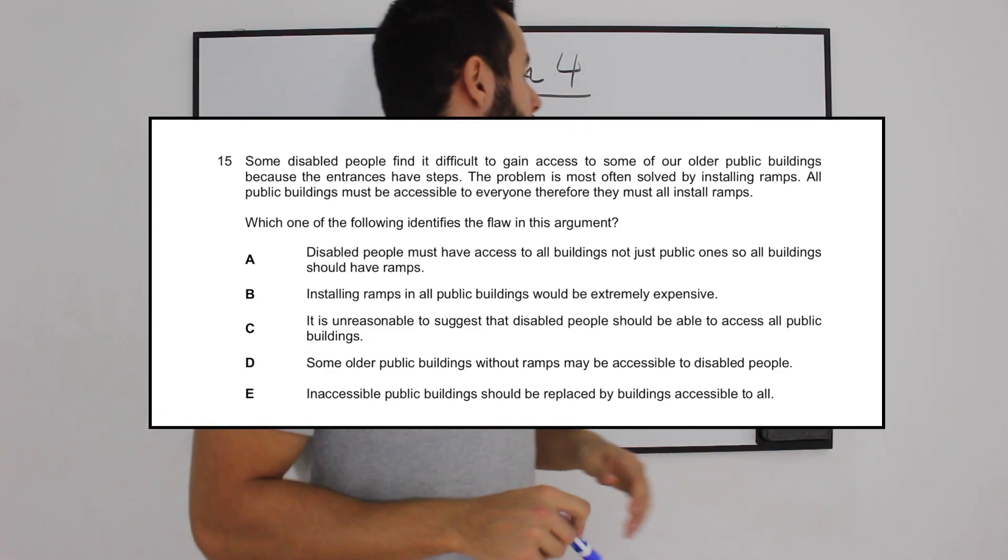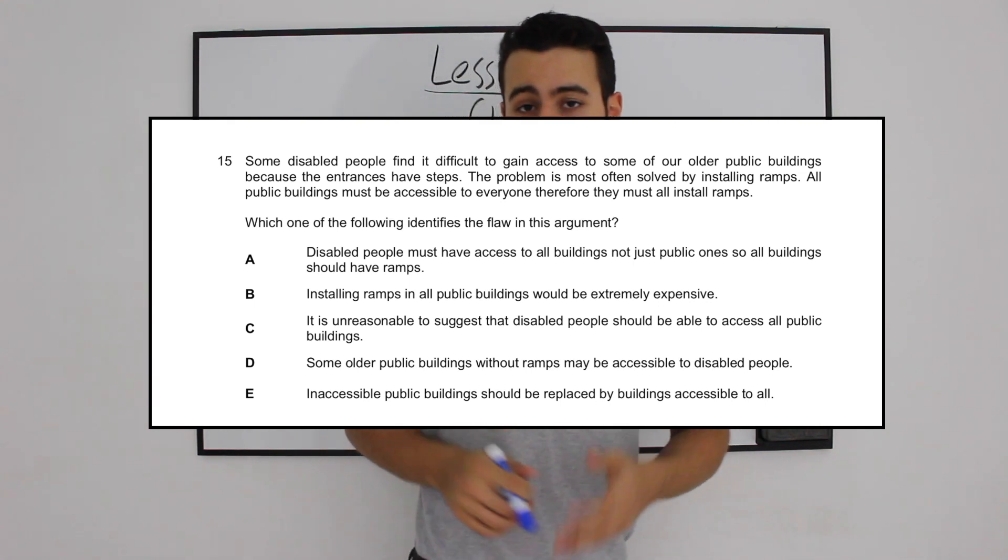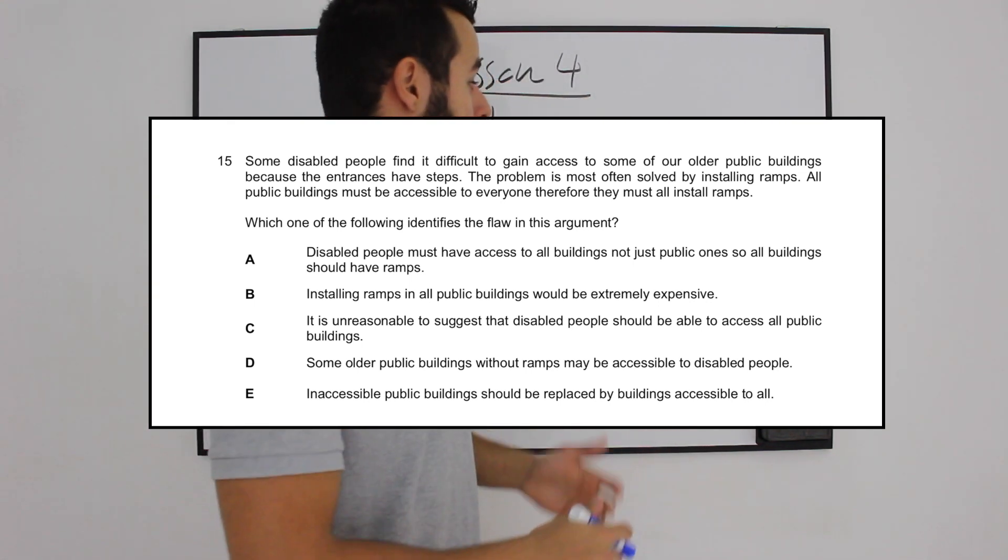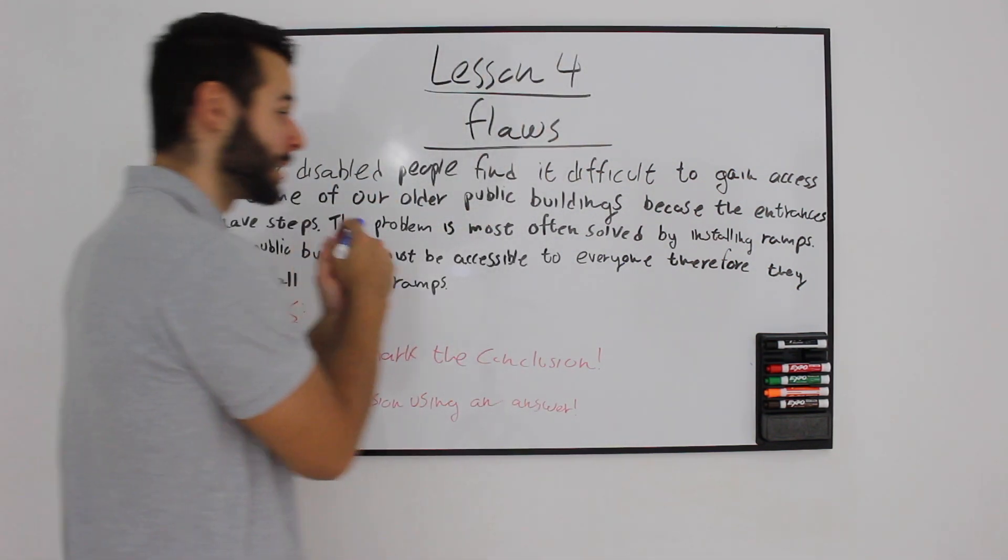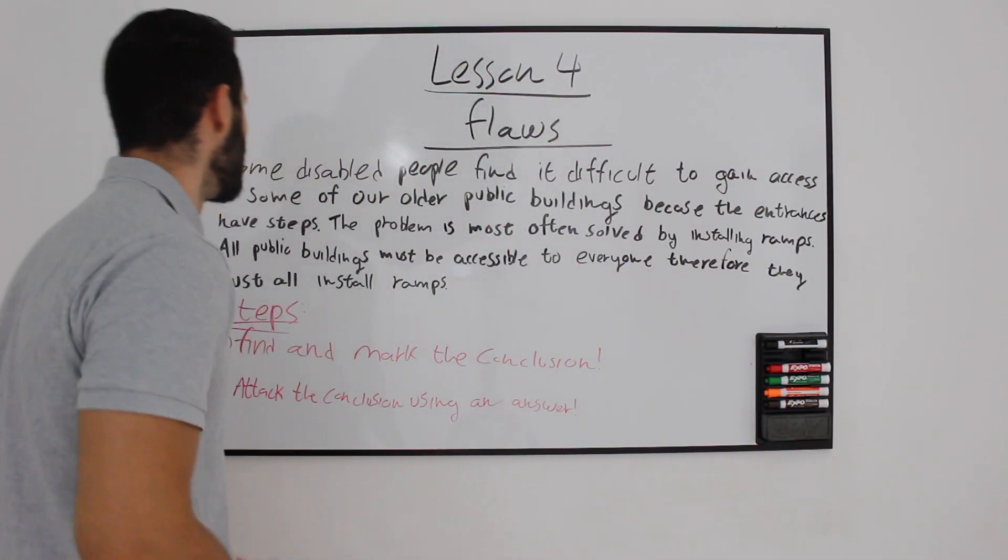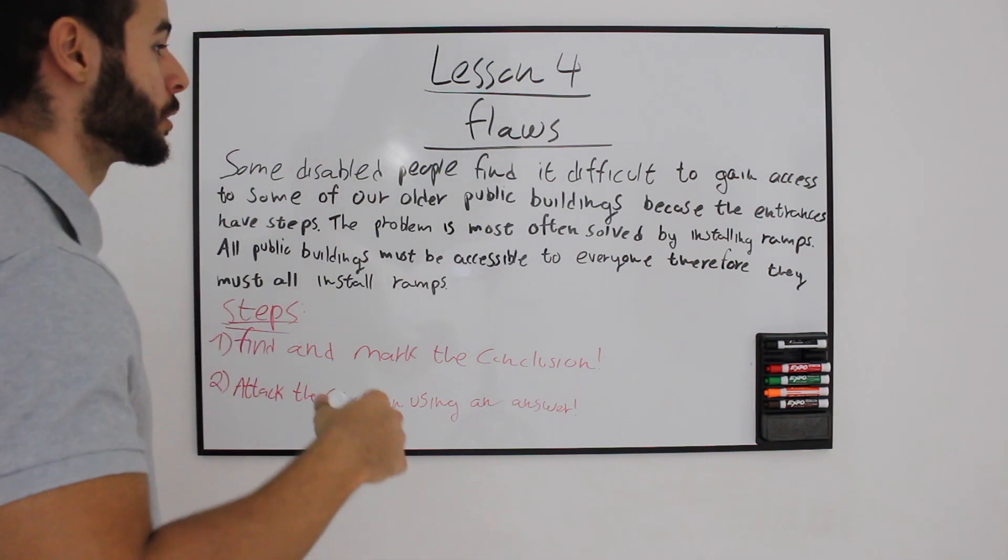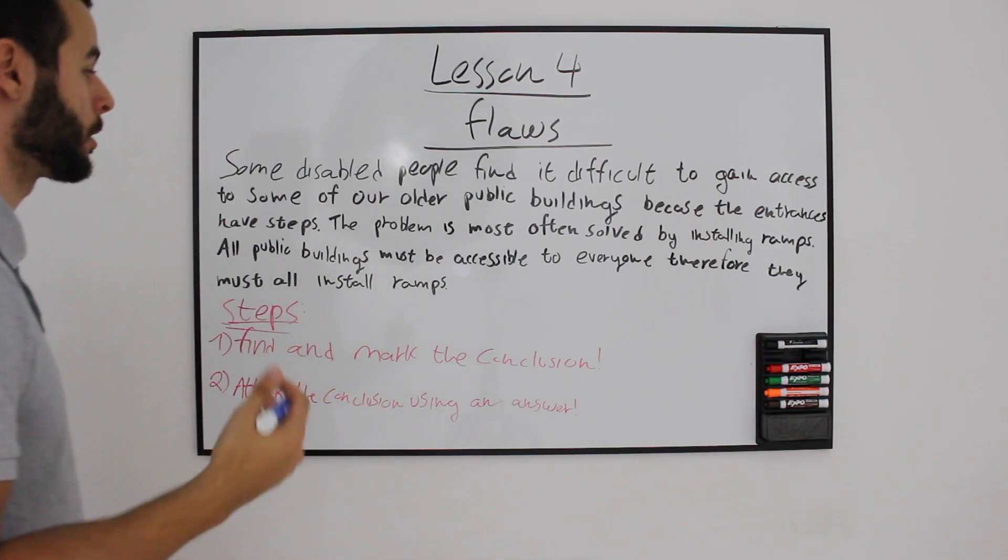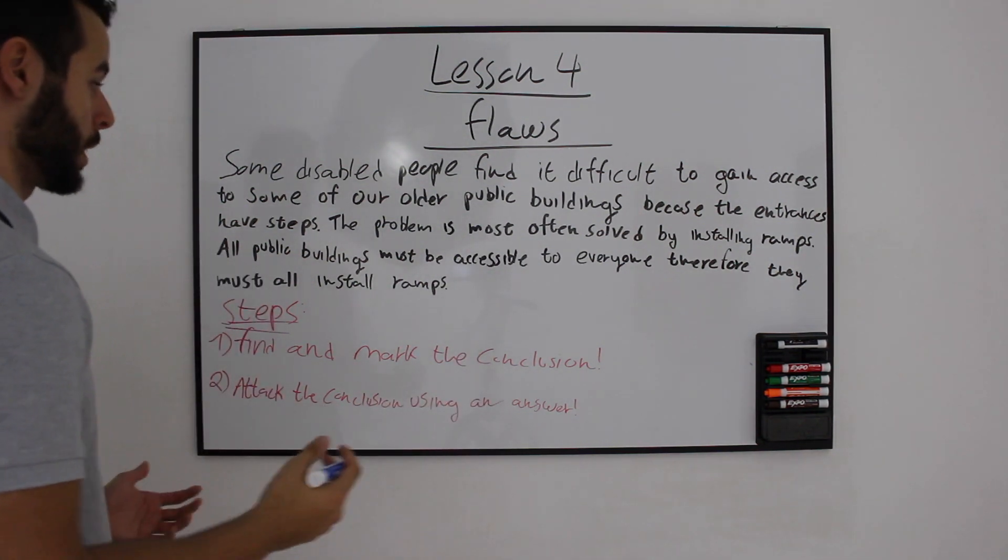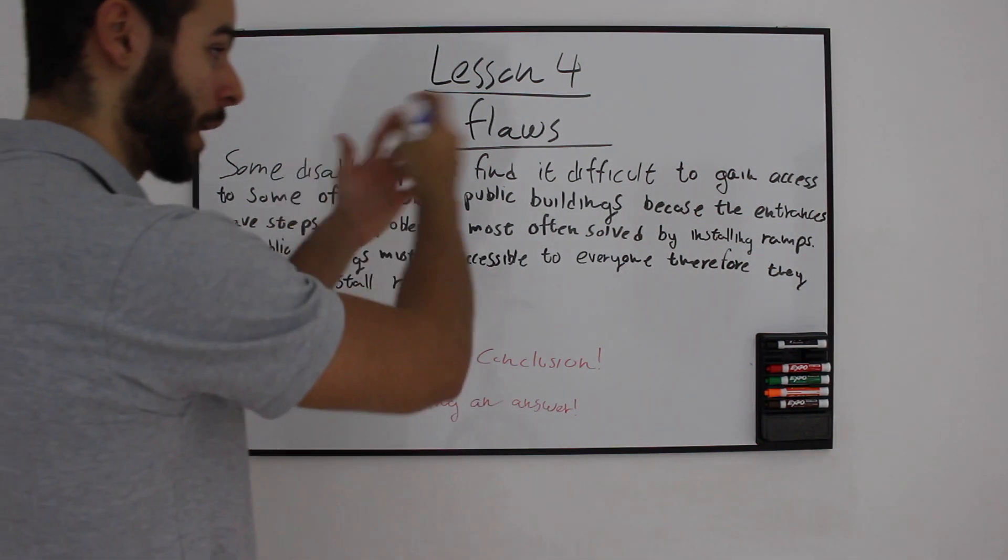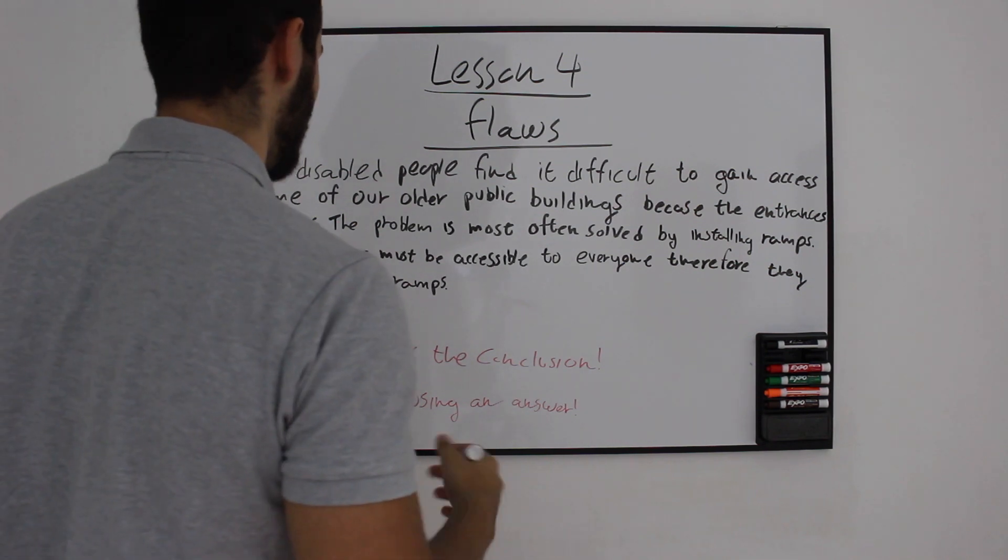Good. Now I'm going to give you my 2 steps to actually solve those kind of questions. First of all, like always, we have to find and mark a conclusion inside the following paragraph. Some disabled people find it difficult to gain access to some of our older public buildings because the entrances have steps. This is the problem. You recognize the problem inside the following paragraph.